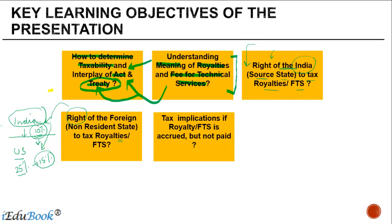The next point covers tax implications if royalty or FTS is accrued but not paid. Under the Income Tax Act, the taxation of royalty or FTS is triggered at the time of accrual or payment, whichever is earlier. But many treaties provide that the taxation event is deferred until the time when the payment is actually made. How these two reconcile — not only from the perspective of the foreign taxpayer but also from the perspective of the Indian payer — is something we will look at in this presentation.